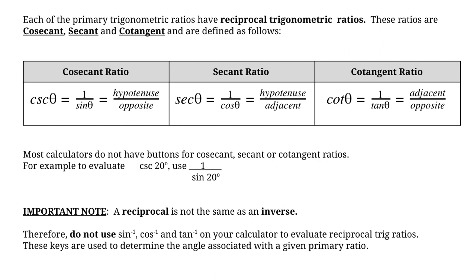Most calculators do not have a button for the reciprocal trig ratios. To evaluate them — for example, the cosecant of 20 degrees — you can do 1 divided by the sine of 20 degrees. So you'll need to remember the names of the reciprocal trig ratios and use 1 over sine θ, 1 over cos θ, or 1 over tan θ. It's also really important to note that the reciprocal is not the same as an inverse.